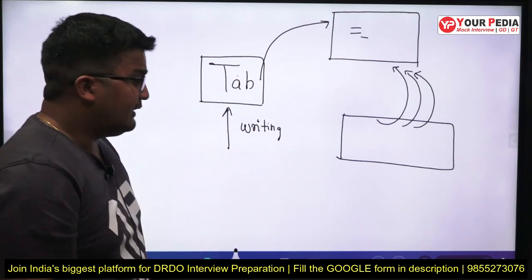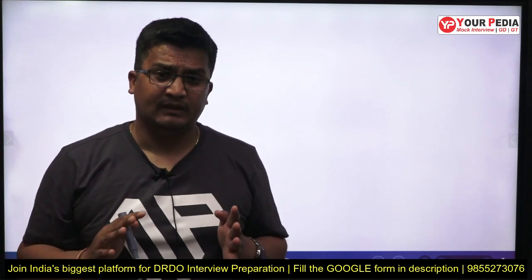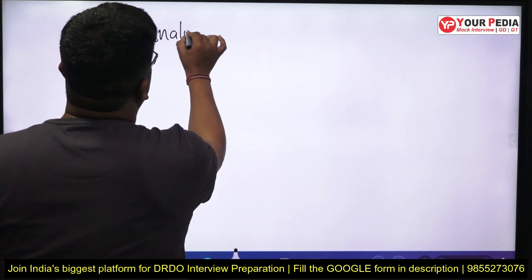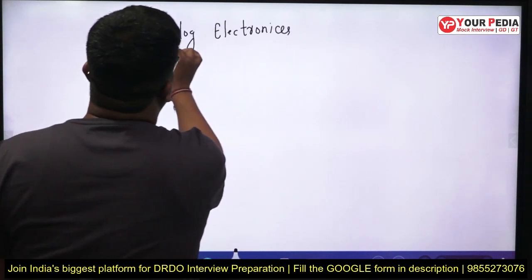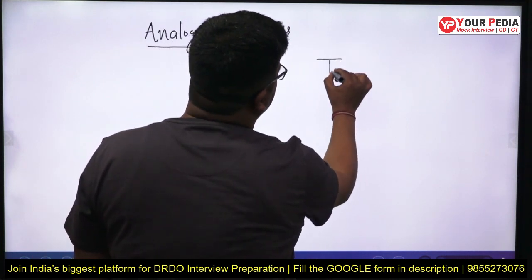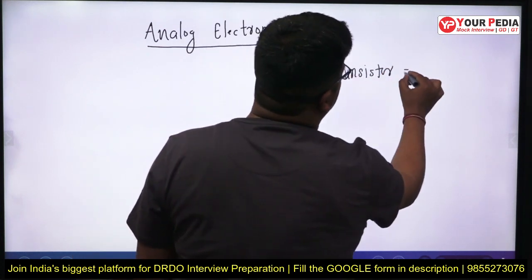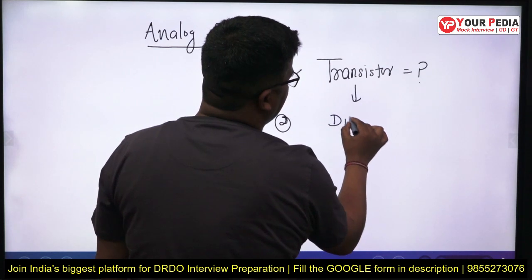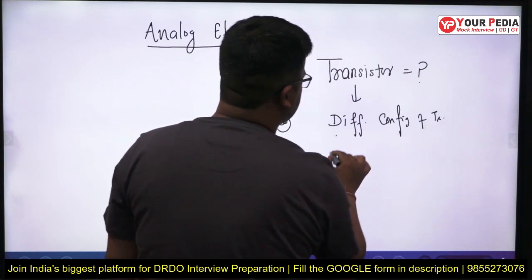Now let me explain what connected questions mean with an actual example from a real interview. Suppose they ask someone what is your favorite subject, and the person says 'I love analog electronics.' In analog electronics, the very basic and important term is transistor. So first they will ask: what is a transistor? Then they will proceed to ask: what are the different configurations of a transistor?